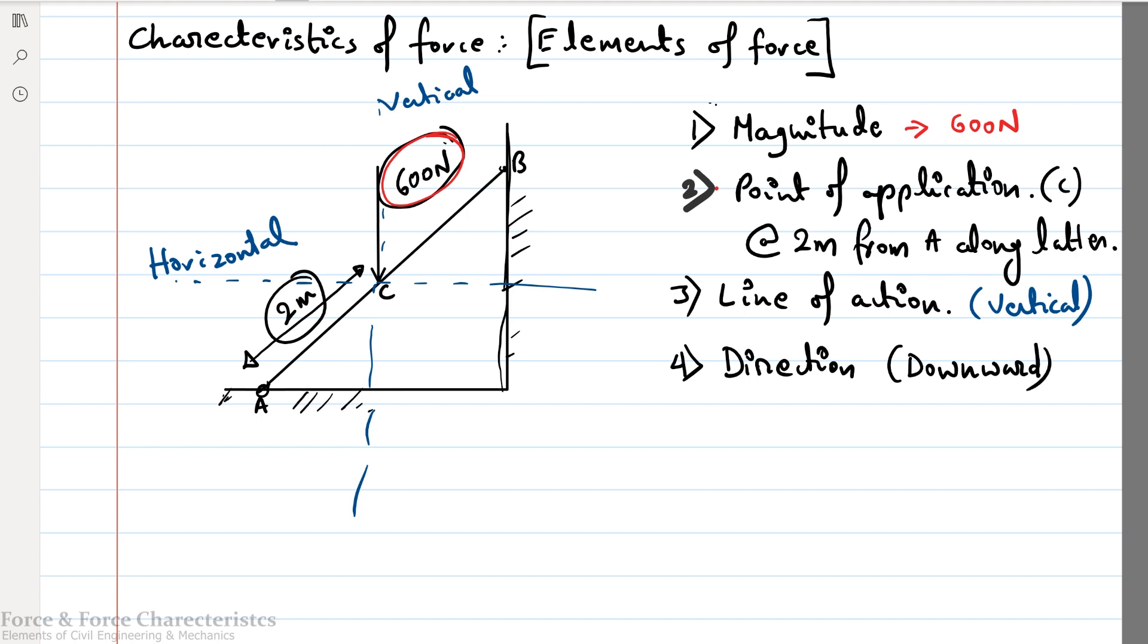If one force is acting, suppose in upward direction, I can say it as upward. In the line of action, if some force is acting at an angle, maybe 30 degree, I can say line of action at an angle of 30 degree with the horizontal. These are the characteristics.